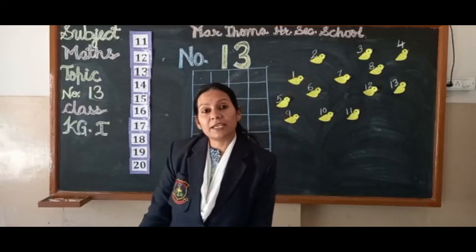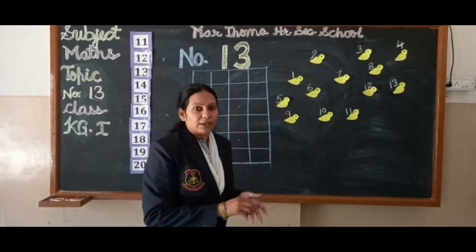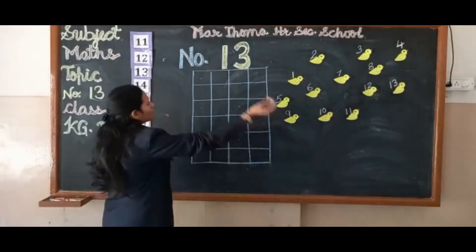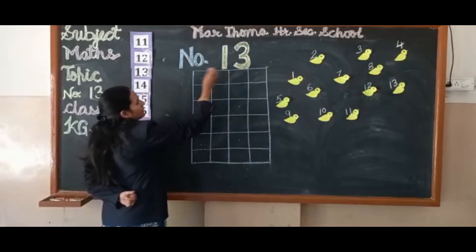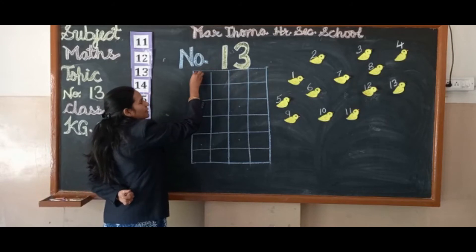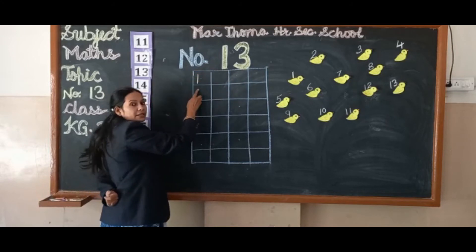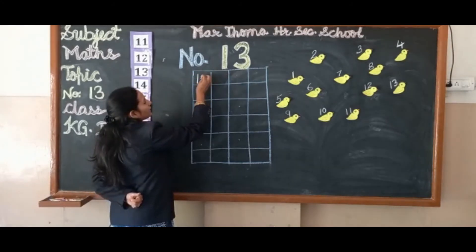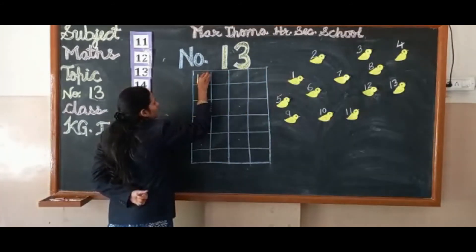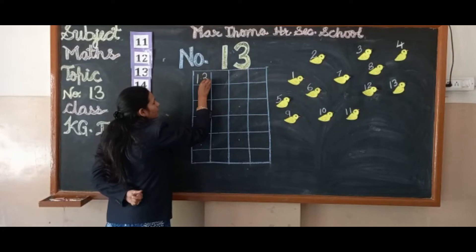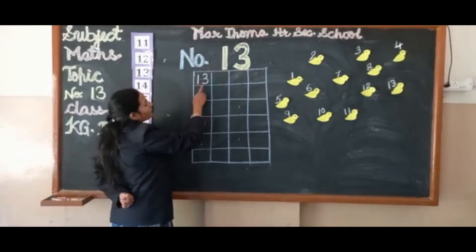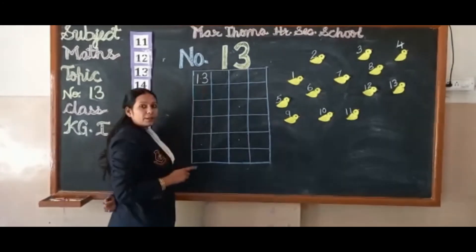So today's number is 13. We will write it on our board. Let's see how to write number 13. First of all we will write a standing line — that means one. After the standing line, what do we make? Three — one semi-circle, then one more semi-circle. This is the number three individually. One and three together make 13.